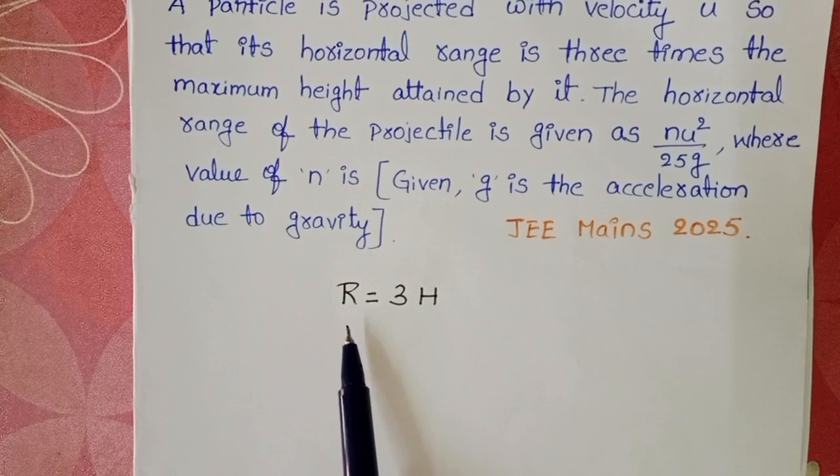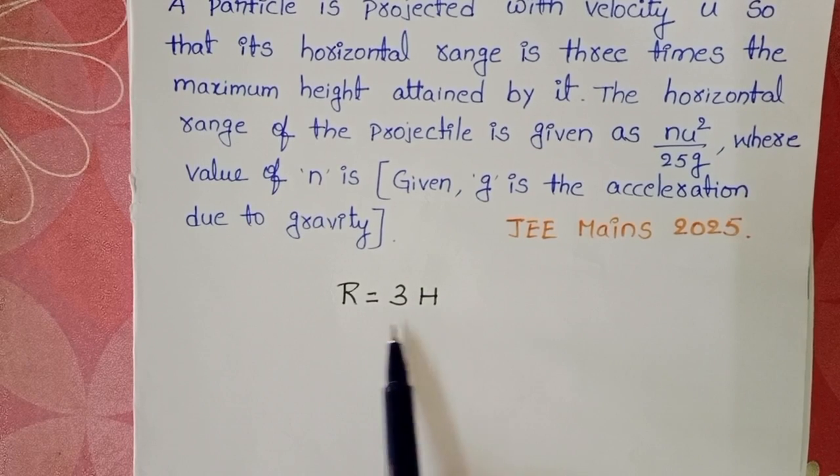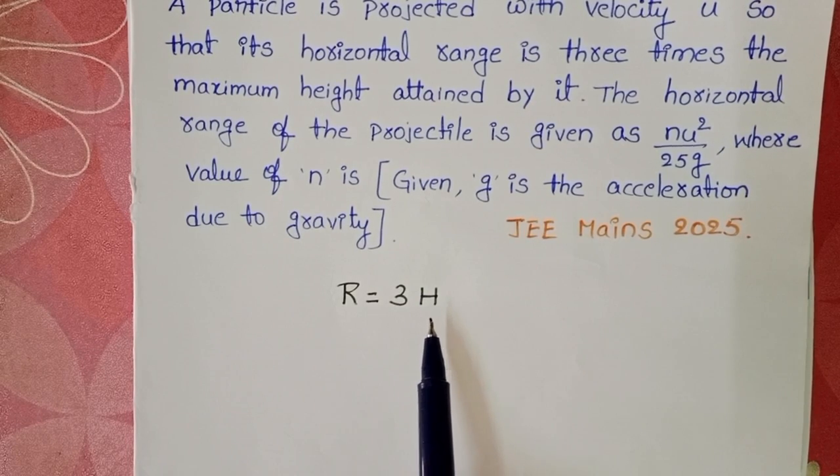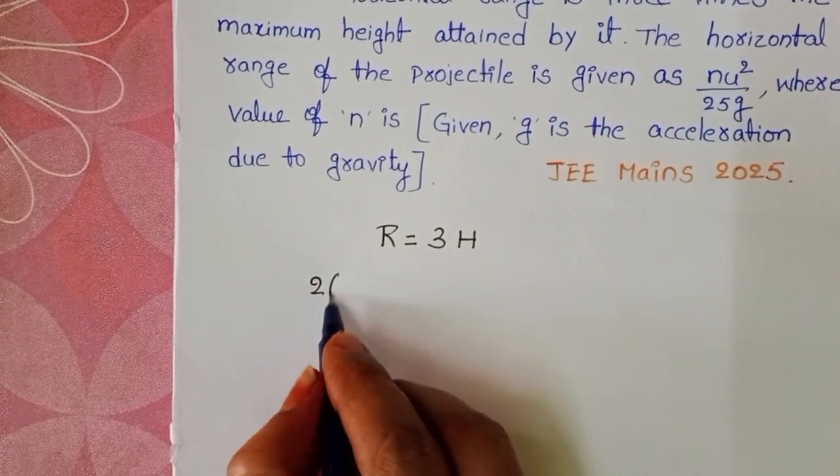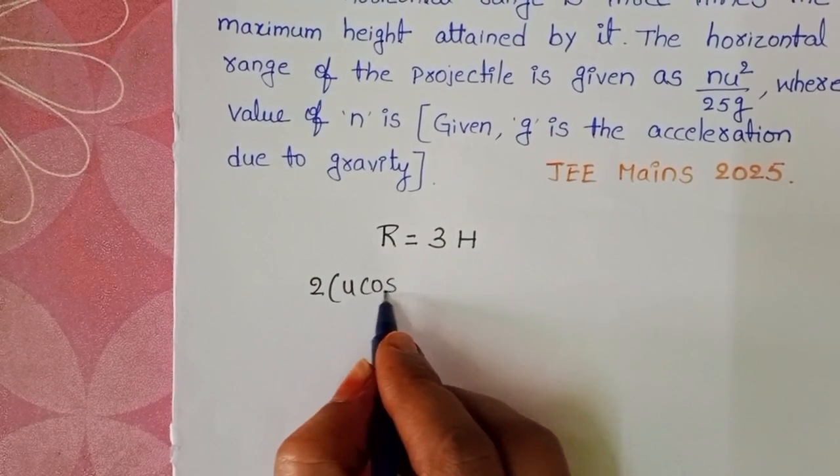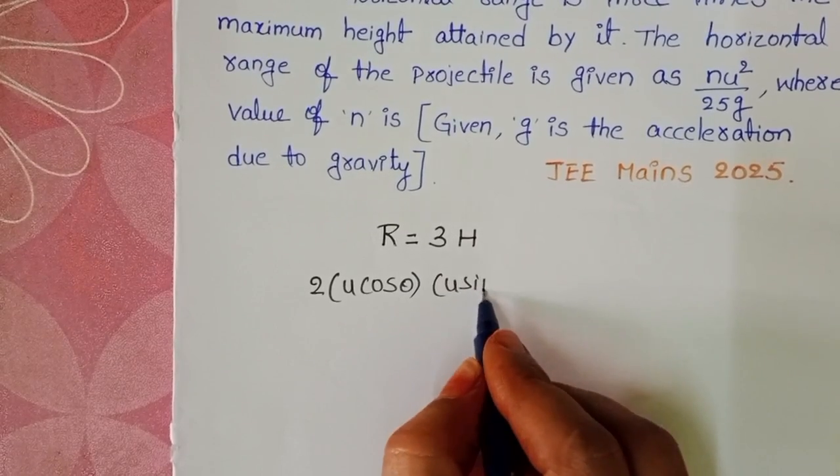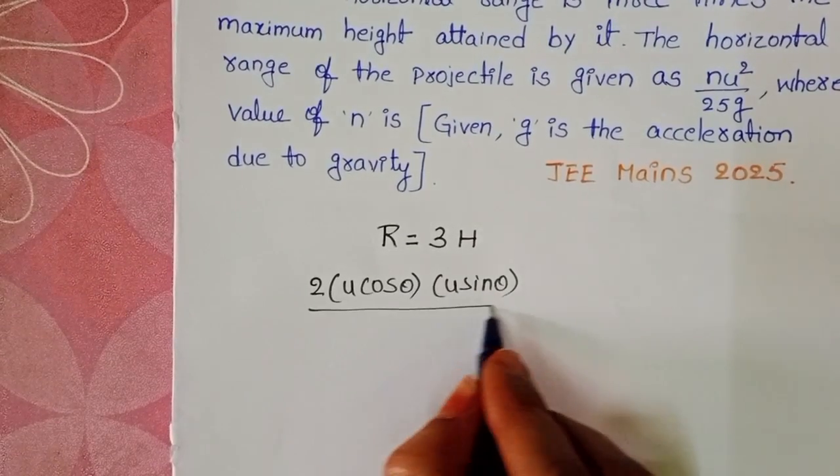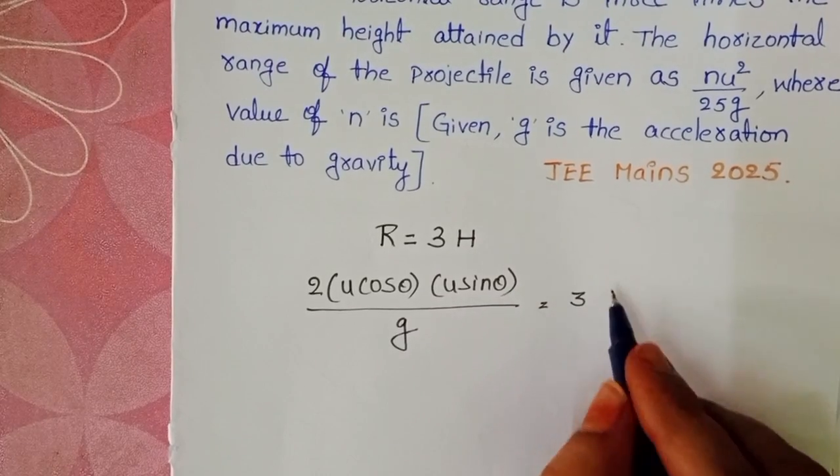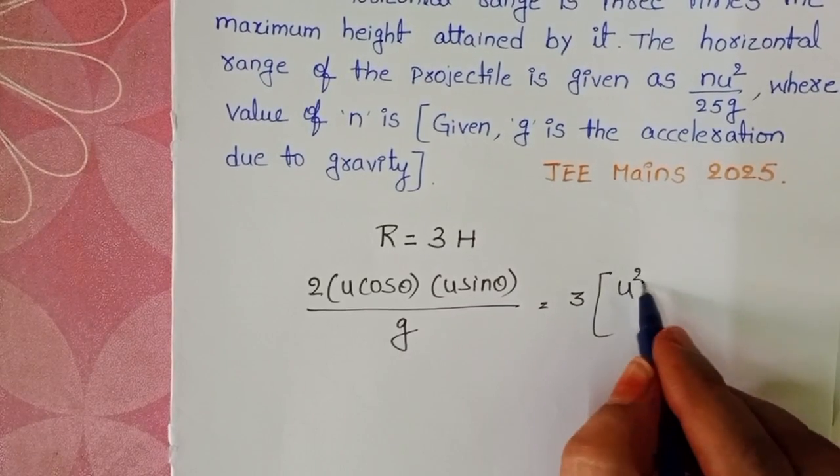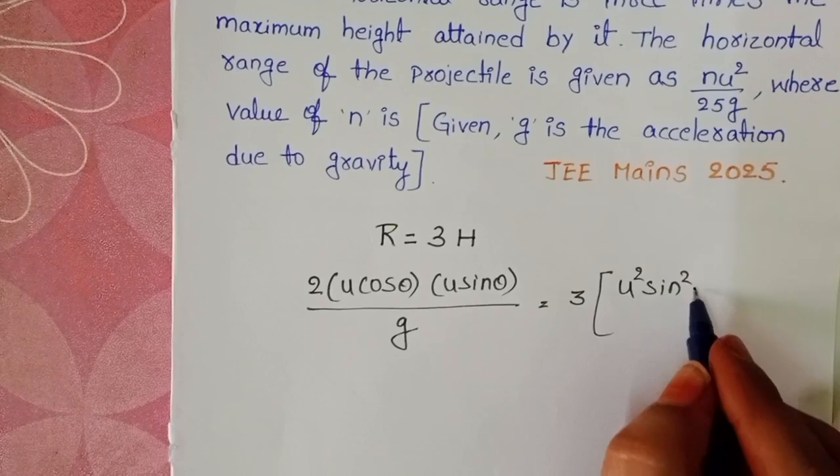The particle covers range and maximum height, that means this is two-dimensional motion. Range formula is 2ucosθusinθ/g. This is the formula to calculate the range. And maximum height formula is u²sin²θ/2g.